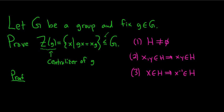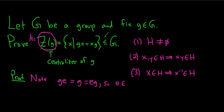Let's go ahead and show it's not empty. In this problem our H is Z(g) — the centralizer of little g. We have to find an element that commutes with little g. Note: g·e equals g, which also equals e·g, since e is the identity. So g·e equals e·g, which is precisely the assertion that e is in the centralizer of little g. So the centralizer is a non-empty set.